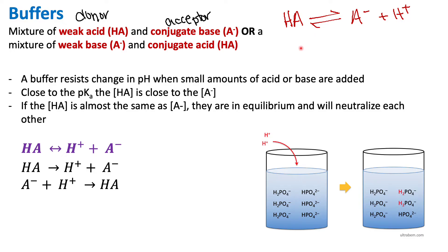This is very important to how buffers work, because buffers work ideally near this equilibrium point. For our generic equation, weak acid dissociates into H+ and conjugate base — a reversible reaction. Breaking this into the forward reaction: HA → H+ + A-, and the reverse reaction: A- + H+ → HA. When near the equilibrium point, these two reactions neutralize one another. Now let's say we're near equilibrium and I decide to add acid.